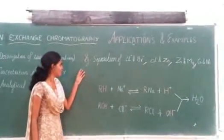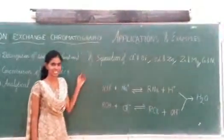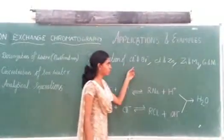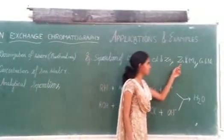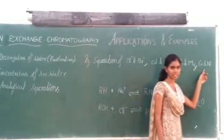Now let us discuss about the various examples of ion exchange chromatography: separation of chloride and bromide, cadmium and zinc, zinc and magnesium, cobalt and nickel.